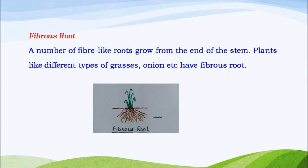Fibrous root. In plants like onions and different types of grasses, a number of fiber-like roots grow from the end of the stem. Such a root is called fibrous root.